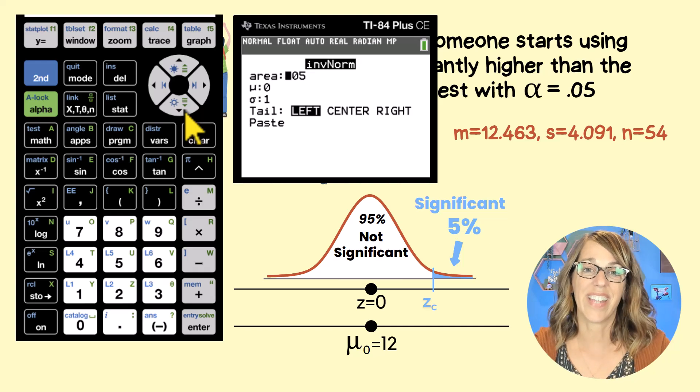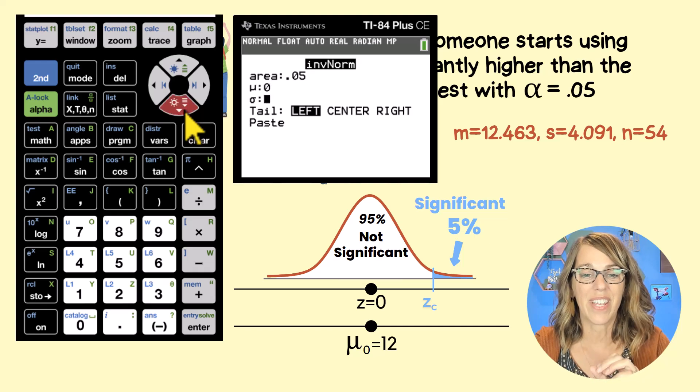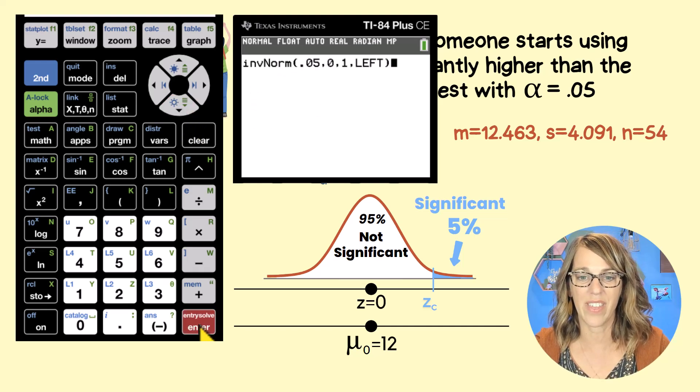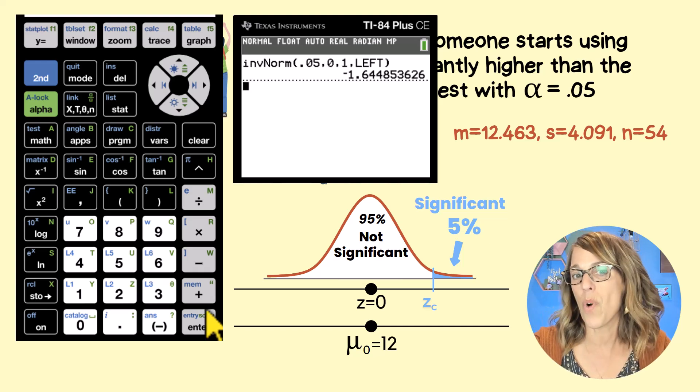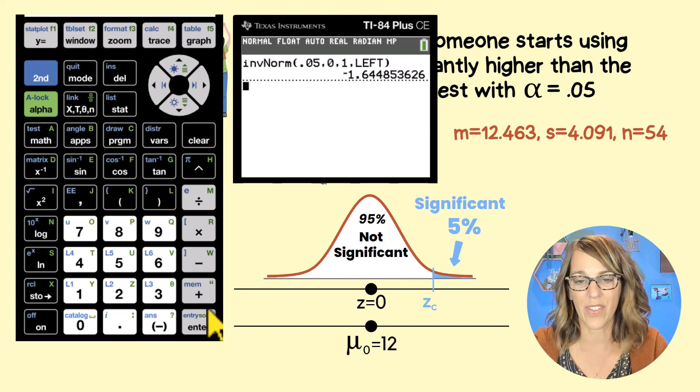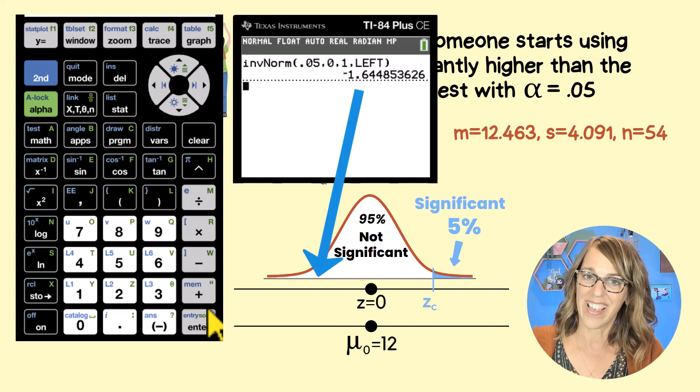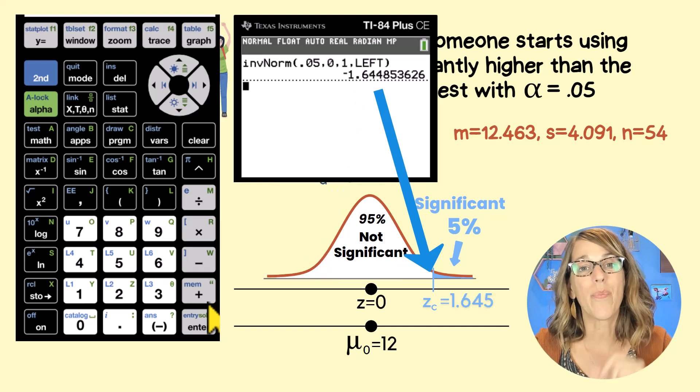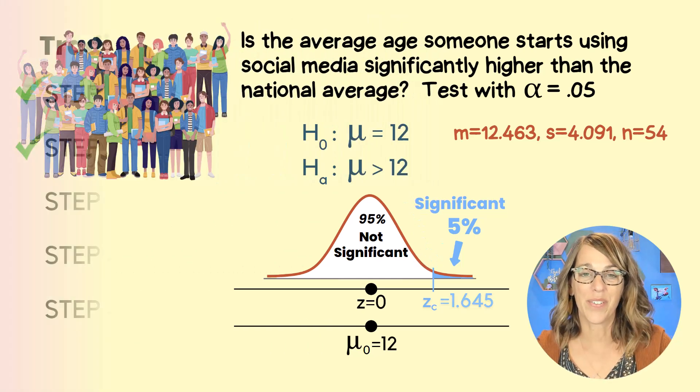I am on that standard normal curve. So we're going to leave mu equal to 0 and that standard deviation equal to 1. I don't bother with left, center, and right. So I'm just going to skip right past that and then paste and then enter. And we get this Z score of negative 1.6, let's call that 645. But I know that I'm not on the left-hand side. I am on the right-hand side. So that's going to give me a positive 1.645. So we've got that critical value.